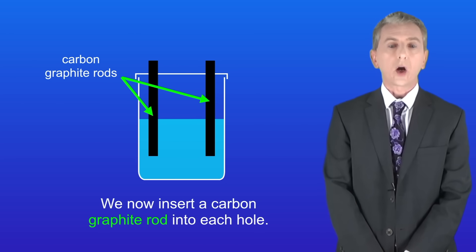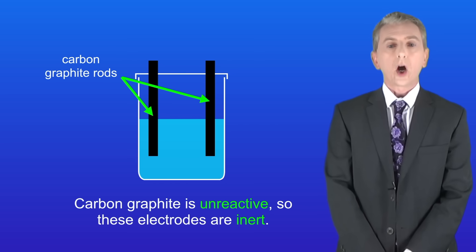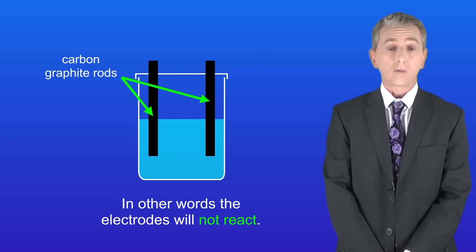We now insert a carbon graphite rod into each hole and these are electrodes. Carbon graphite is unreactive so these electrodes are inert. In other words the electrodes will not react.